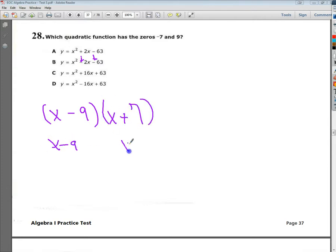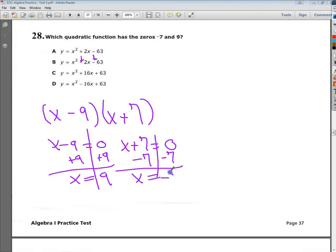Set them equal to 0 because I'm looking for their 0 value. So plus 9, x is equal to 9, x is equal to negative 7. So there it is. I found negative 7 and 9, so my answer is B. That's one way to do it.